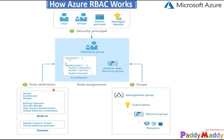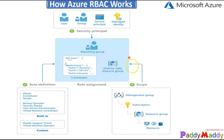Now let's look at how this looks in a consolidated view. You have security principals — for example, a marketing group — and there is an action to either delete, write, or elevate access for the contributor. That marketing group can have a role definition such as contributor, owner, or reader. These are built-in or custom roles, applied for a specific scope — management group level, subscription, or resource group layer.